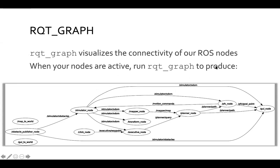When nodes are active, 'rqt_graph' produces a figure showing nodes as ovals connected by topics. Through the workshop, we now understand what each of these things is doing, how it could have been implemented, and how these topics share data of some type — together forming the computation that creates the robot behavior we want.